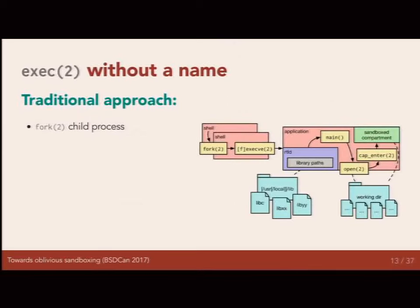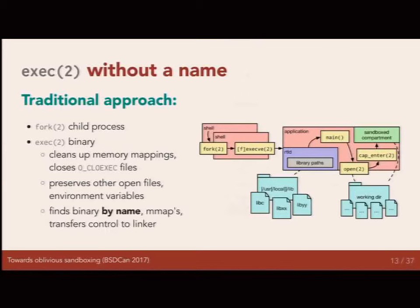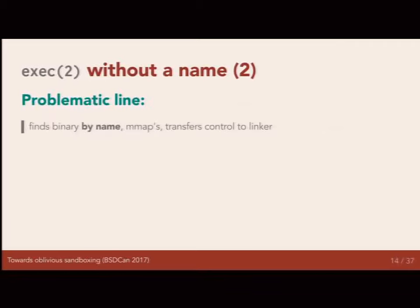How does exec work without a name? Traditionally, we fork a child process, exec a binary, which cleans up memory mappings and closes close-on-exec files, but preserves other open files and environment variables. The kernel takes a name, goes to the file system, finds the binary, mmaps it, and transfers control to the runtime linker. So there are three problems. The first is kind of obvious: finding the binary by name. The solution? fexecve — we have a file descriptor lying around because we opened it before starting the sandbox, so we can say, dear kernel, execute that.